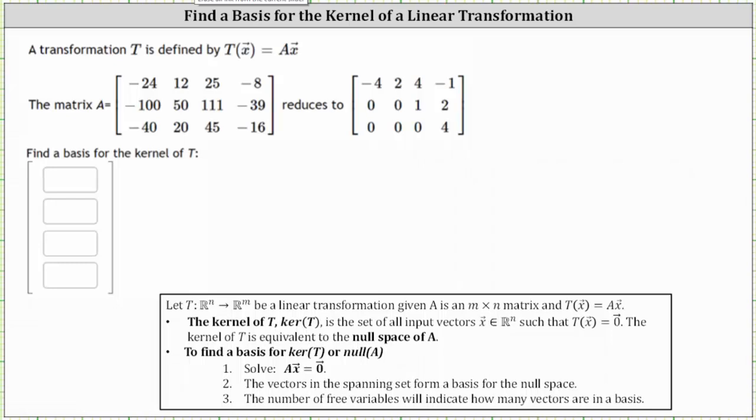A transformation T is defined by T of vector x equals matrix A times vector x. We are given matrix A, as well as matrix A in row echelon form.